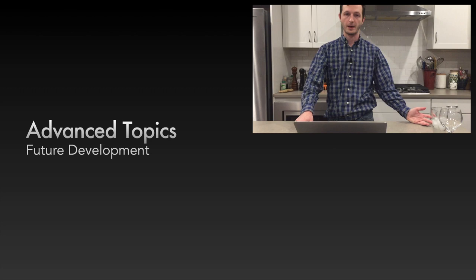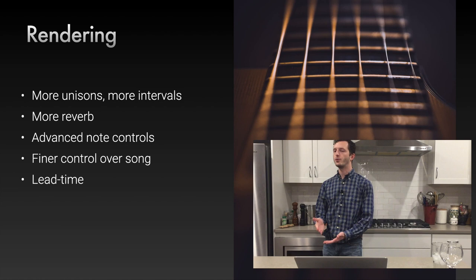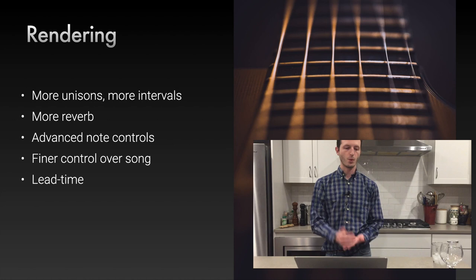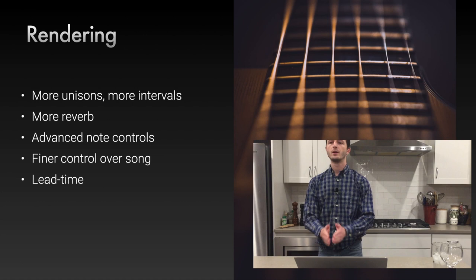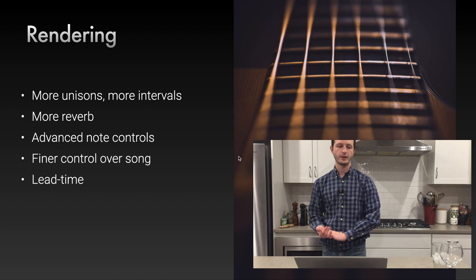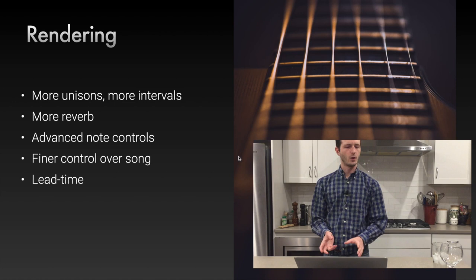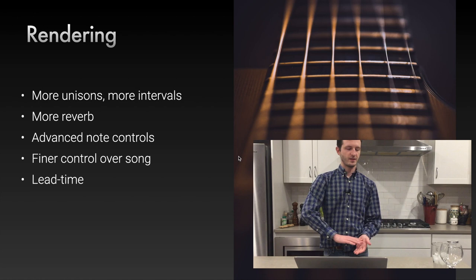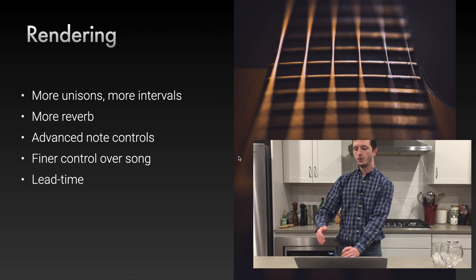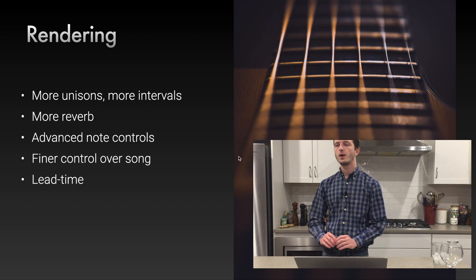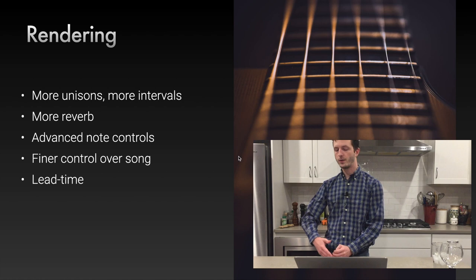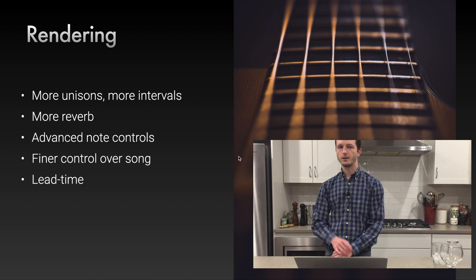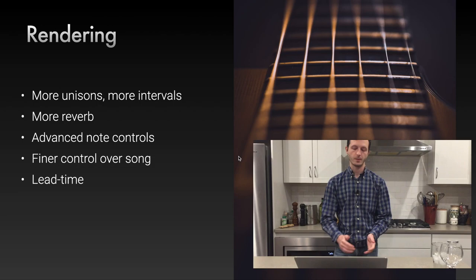Advanced topics — what you get access to by sticking with Python for sound design. First: rendering. Since you can run in a non-real-time context, you can put more unisons, intervals, and saturation in the sound, spending 10 seconds of computing time to generate one second of audio. You can put more reverb on an instrument — real-time contexts always struggle with reverb since it's a slow operation. You can more finely control your song since you're rendering directly to it: if the song needs vibrato in a specific part, you just code it in. You can also add lead time on instruments.